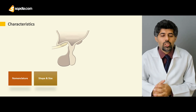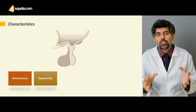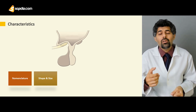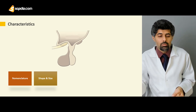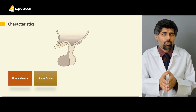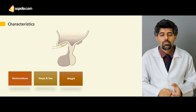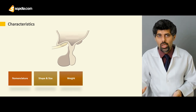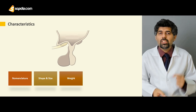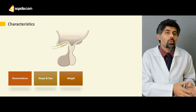Next we have shape and size. As for the shape, it is shaped like a pouch with the stalk arising superiorly towards the hypothalamus. As for the size, it has a maximum diameter of about one centimeter. As for the weight, it is a relatively small gland with a weight of around only two grams.